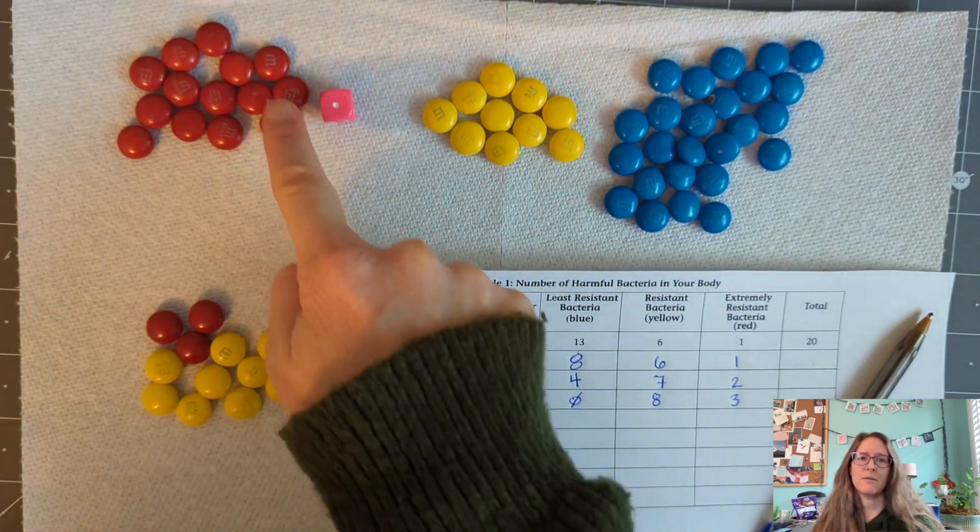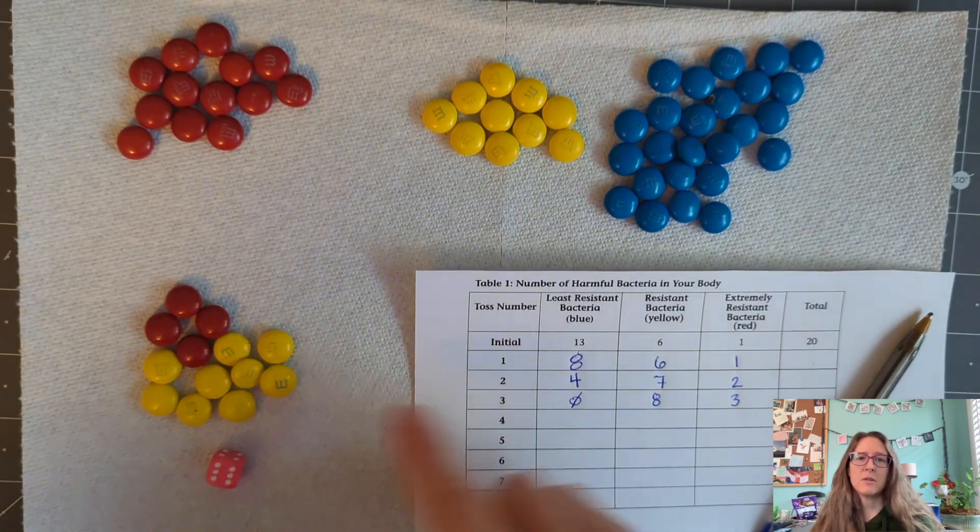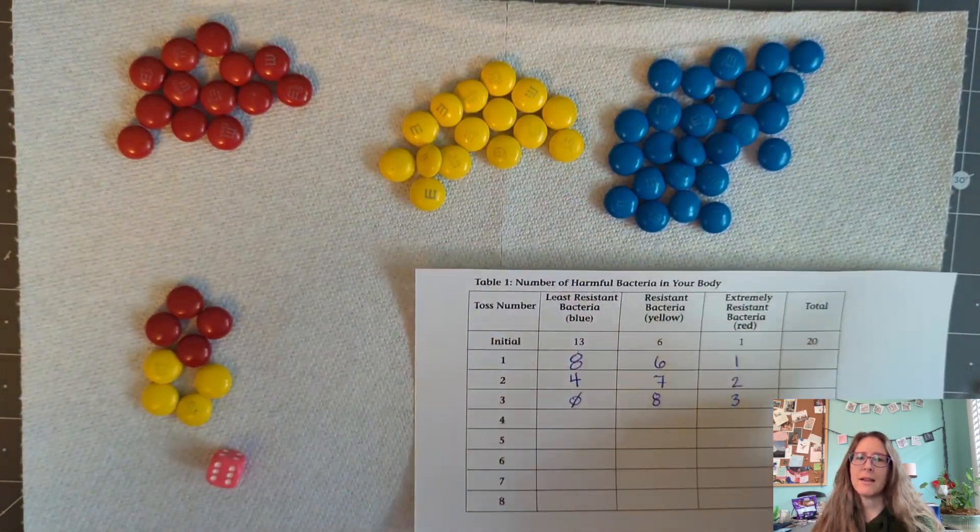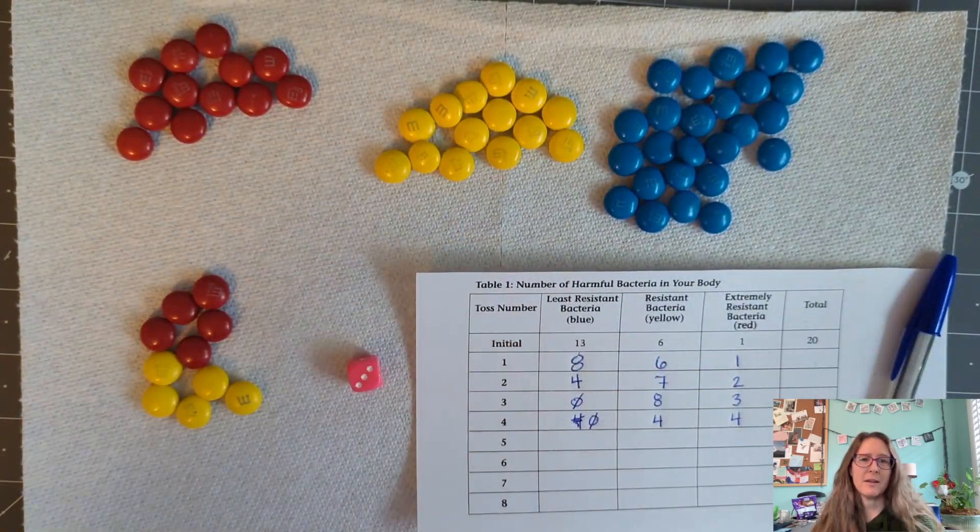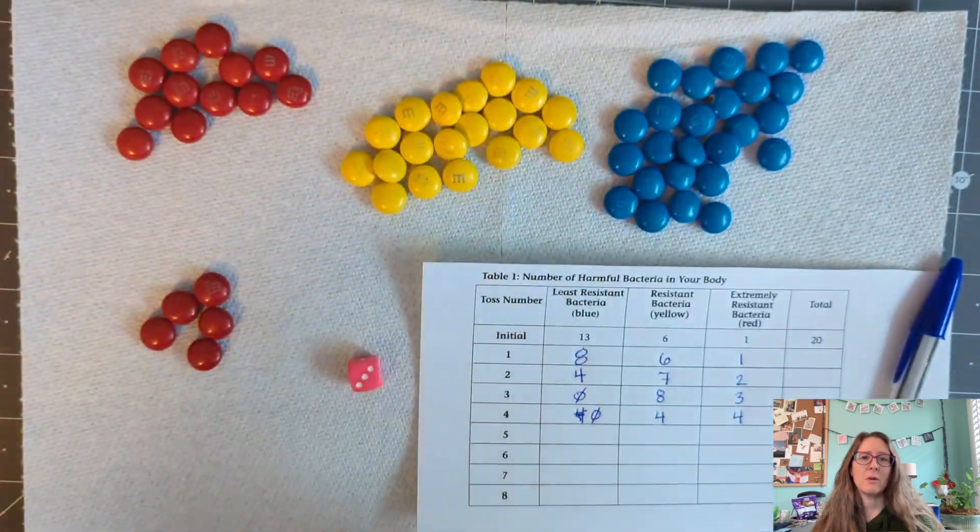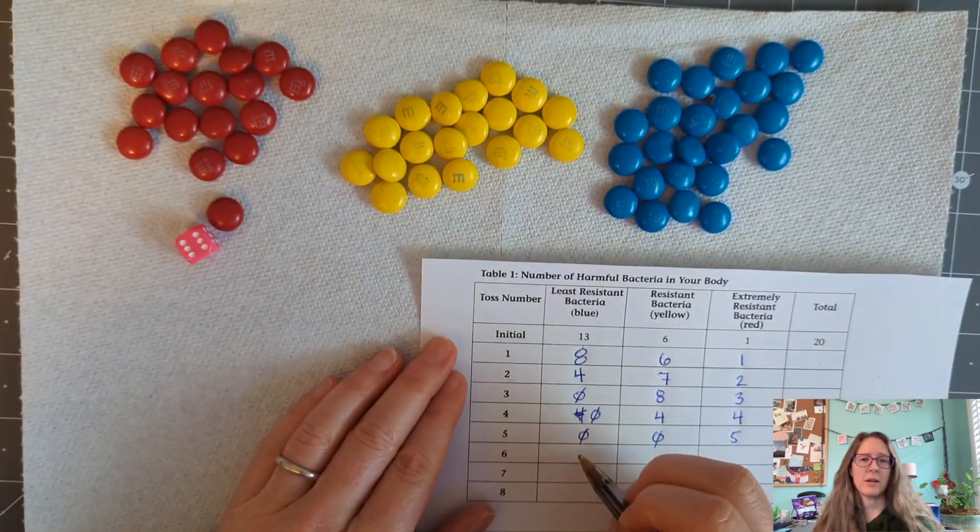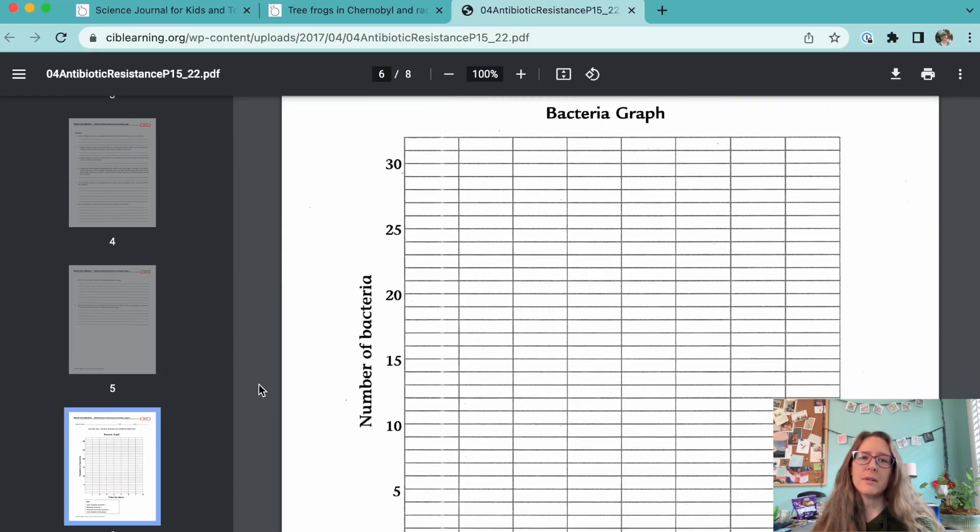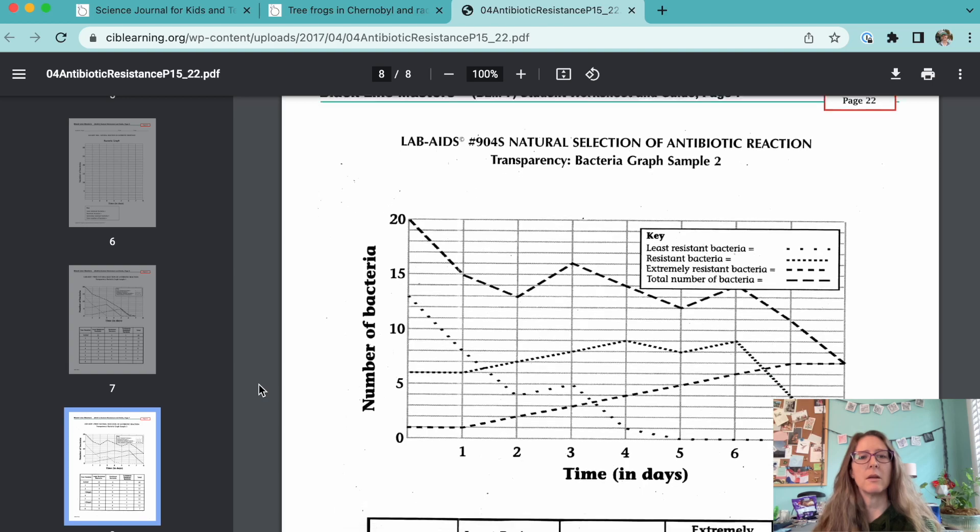Students will complete eight rounds of antibiotics and record their data each round. Some students will take all their antibiotics and kill off the bacteria. Others will forget their antibiotics and their bacteria population will grow. I usually have my students graph their data so they can see the trend better. There are two example graphs and data tables at the end of the activity so you can see what they might look like.